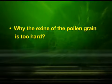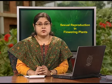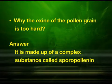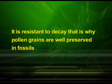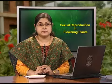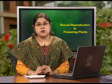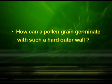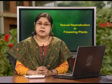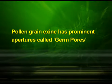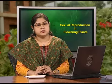The first point was: why is the exine of the pollen grain so hard? The reason is that the exine, which is the outermost layer of the pollen grain, is made up of a complex substance called sporopollenin. This substance is one of the hardest materials known to human beings. It is resistant to decay, which is why pollen grains are well preserved in fossils. No enzyme that can degrade sporopollenin is known to us. Now, how can a pollen grain germinate with such a hard outer wall? The answer is that the exine has prominent apertures called germ pores where sporopollenin is absent, and germination takes place through these germ pores.